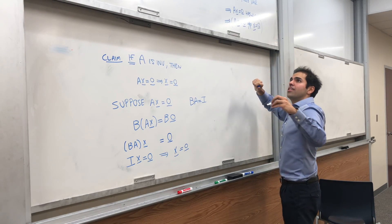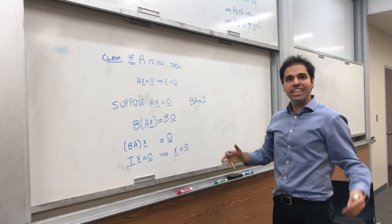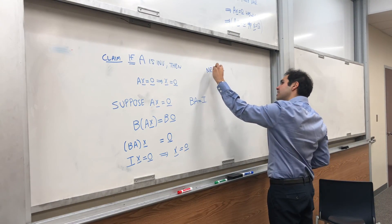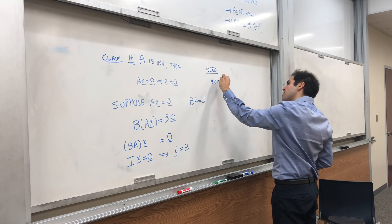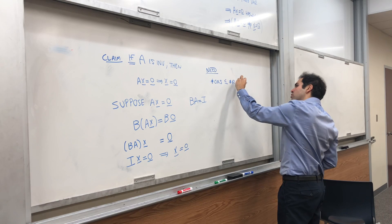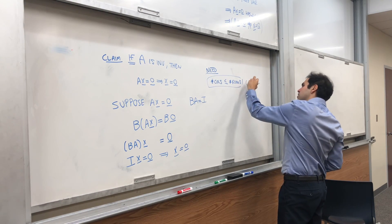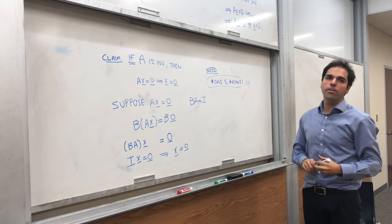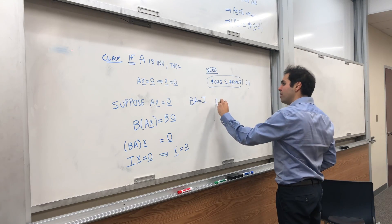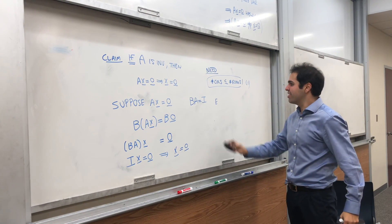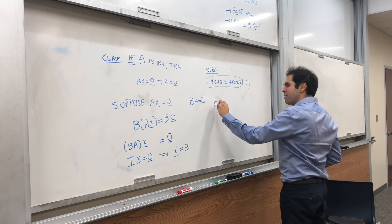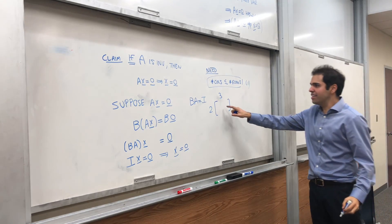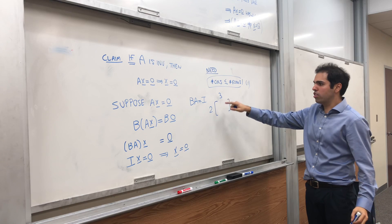In other words, for a matrix to be invertible, we cannot have more columns than rows. So we need number of columns to be less than or equal to the number of rows. Let's call this one. Because if there are more columns than rows, there will always be a free variable. What about the other case? One thing, though.